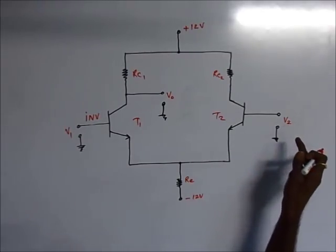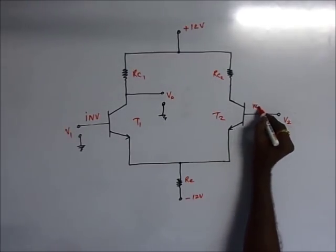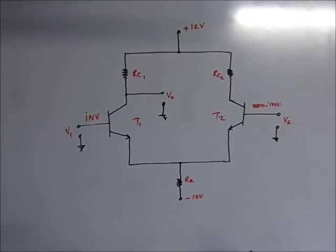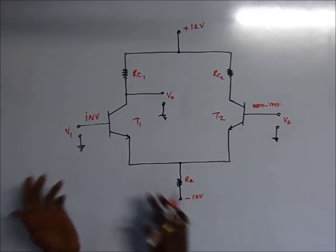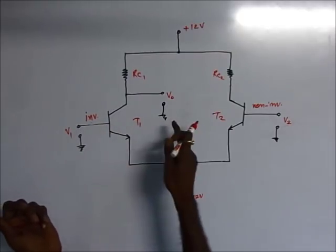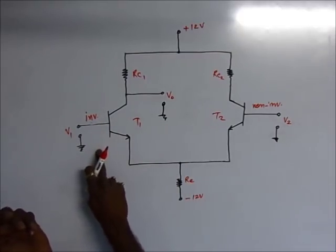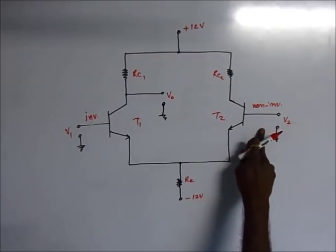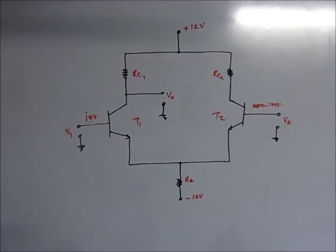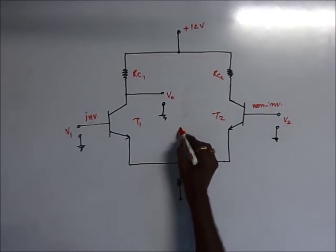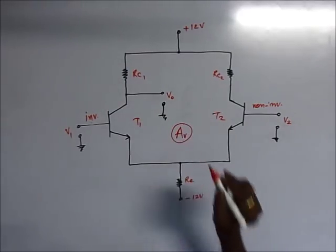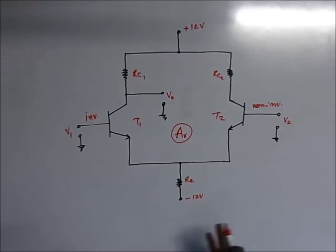The other input terminal is therefore known as the non-inverting input terminal. So it is clear that at the inverting input terminal the output is out of phase with respect to the input, and for the non-inverting terminal the output is in phase with the input. The gain of this circuit is denoted as A, or generally as AV — we can use either A or AV.